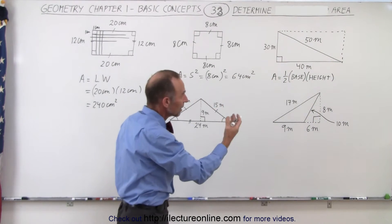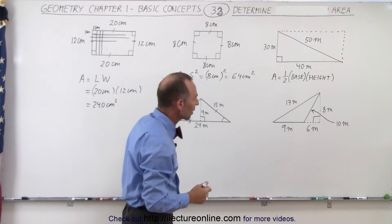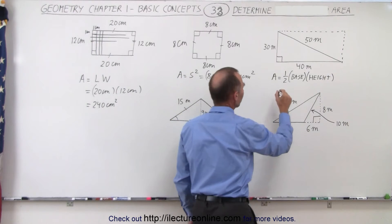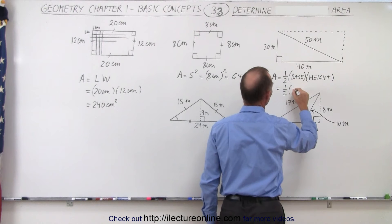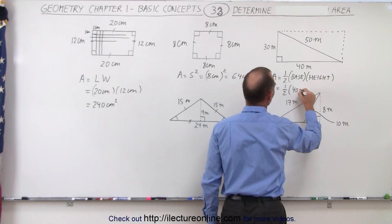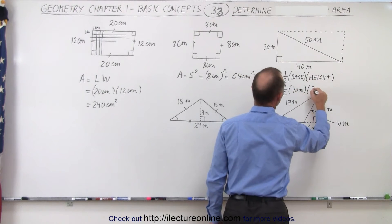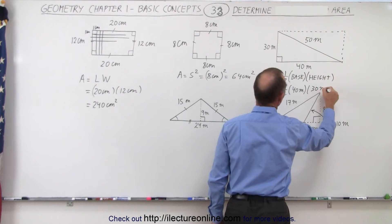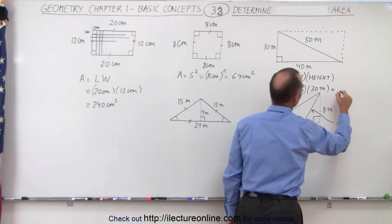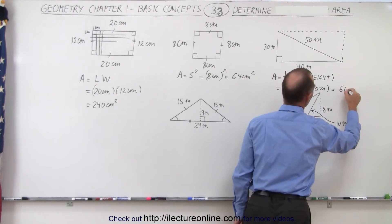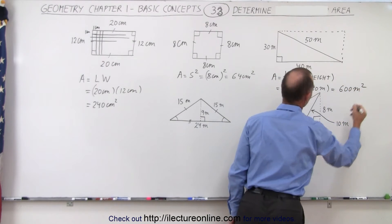And so that's where the formula comes from for a triangle. So in this case, this is equal to one-half times the base, which is 40 meters, times the height, which is 30 meters. That would be 1,200 divided by 2, which is 600 meters squared.